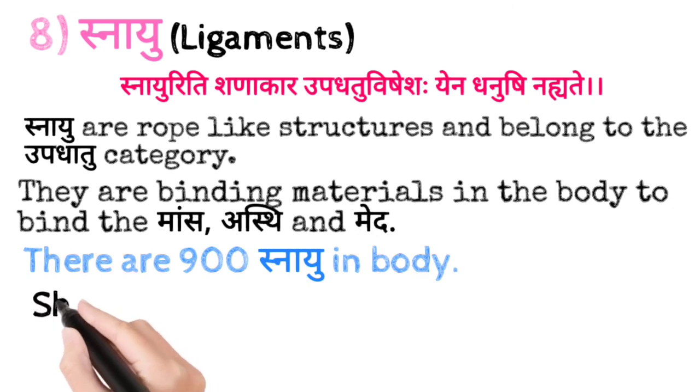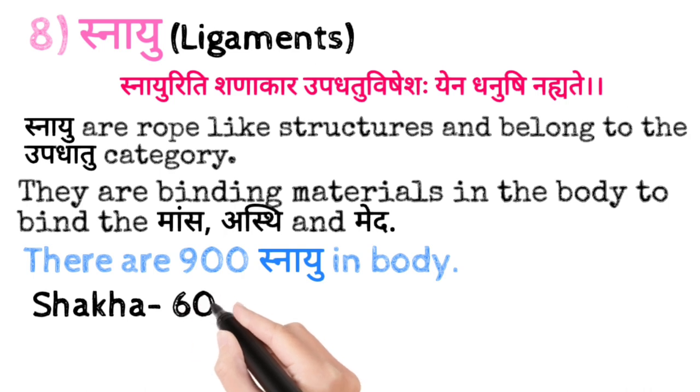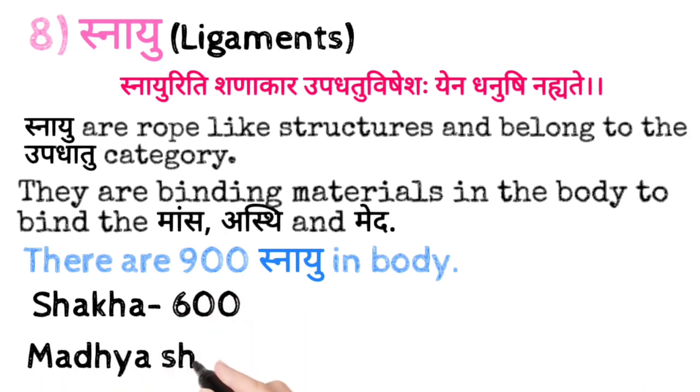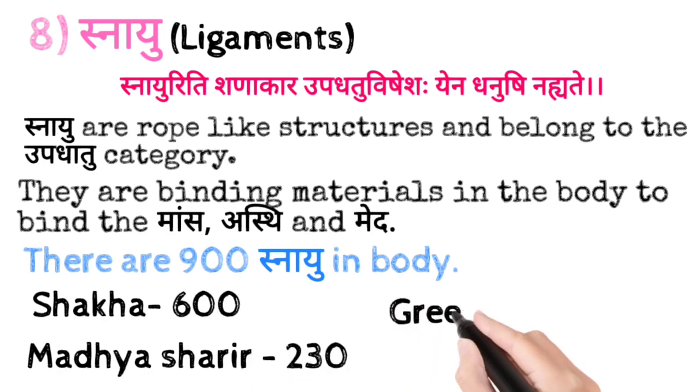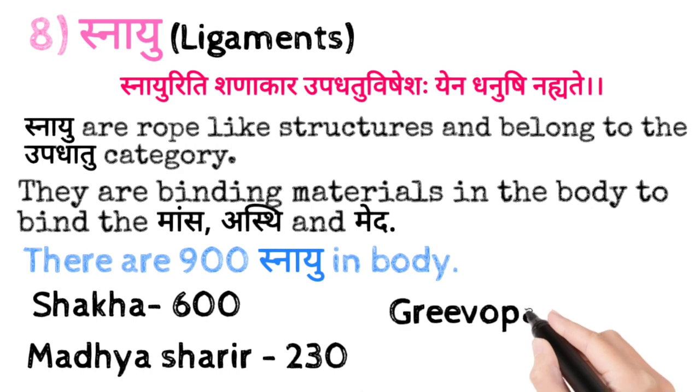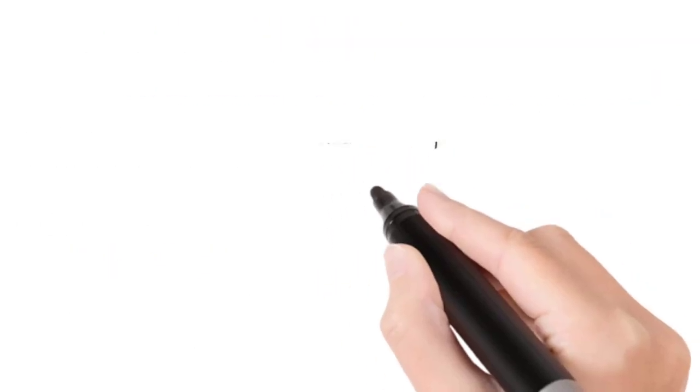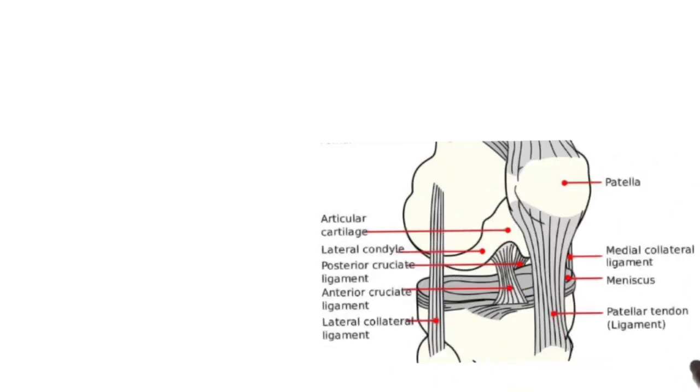Ab aapki jo shakha hai Madhya sharir ki shakha kya hai? Haath aur pair. Usmein hote hain 600. Ab jo hamara Madhya sharir bach gaya usmein hote hain 230. Aur jo Greevo upari matlab Greeva ke upar wahan pe milenge 70 Snayu. Total hue 900. Yeh aap yahan pe dekh sakte ho knee joint ke ligaments hain.